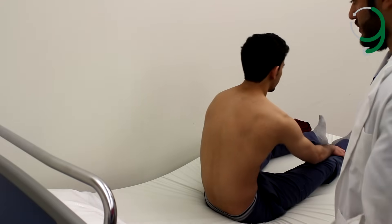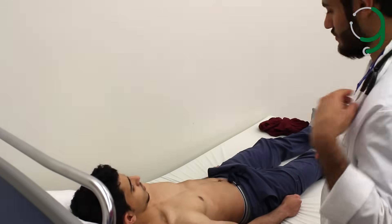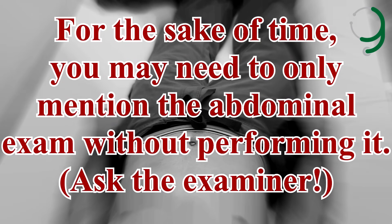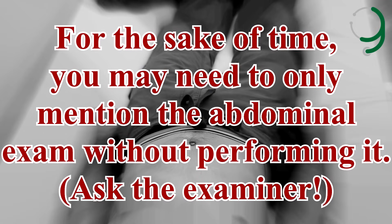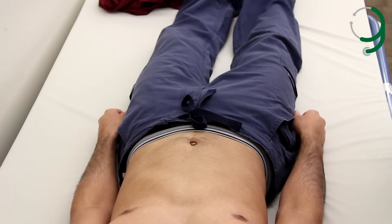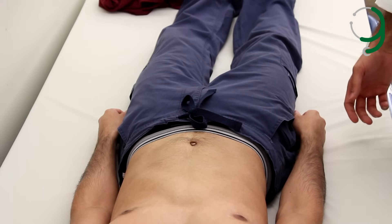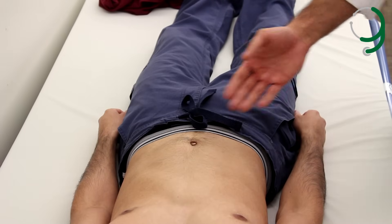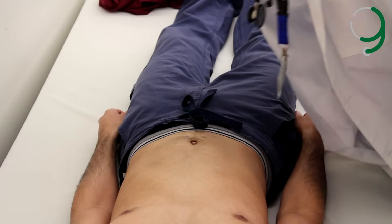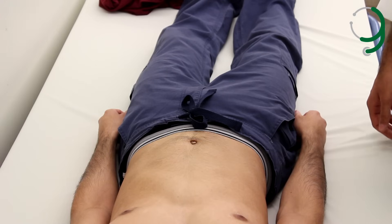Can you lie down again, Mr. Saleh? Now moving down to the patient's abdomen. On inspection, there is no scars, deformities, dilated veins, or distension of the abdomen or the suprapubic area. I should compare the flanks for symmetry — they are symmetrical. There are no obvious masses.